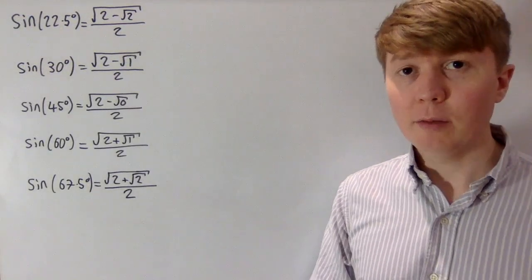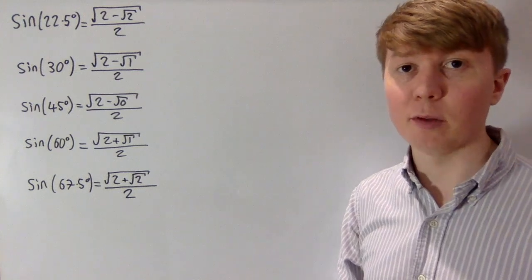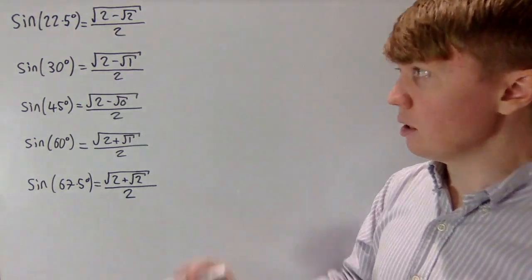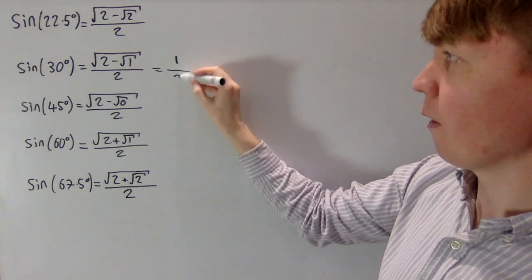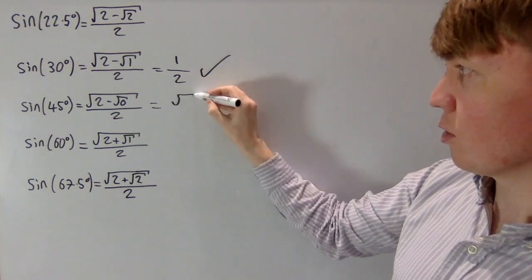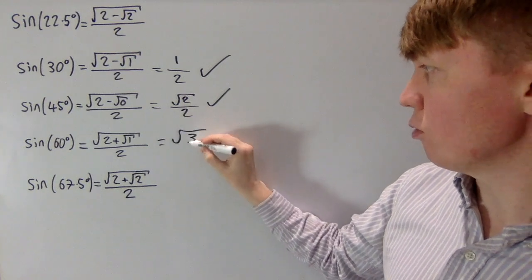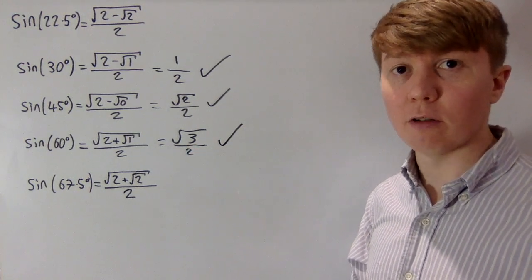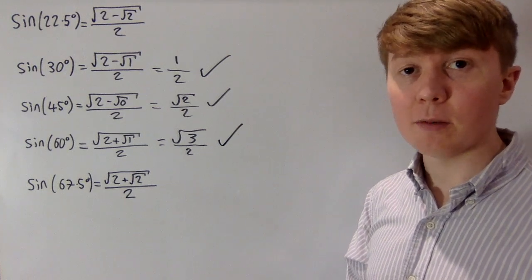Our expression for sin 22.5 degrees is actually in the simplest possible exact form — not all nested square root expressions can be denested. For sin 30 degrees, root 2 minus root 1 simplifies to root 1 divided by 2, which is just 1 over 2 — our familiar value. Similarly, root 2 minus root 0 gives root 2 over 2 for sin 45 degrees. For sin 60, root 2 plus root 1 gives root 3 over 2. For sin 67.5 degrees, just like 22.5, this nested expression can't be simplified and is already in its simplest exact form.